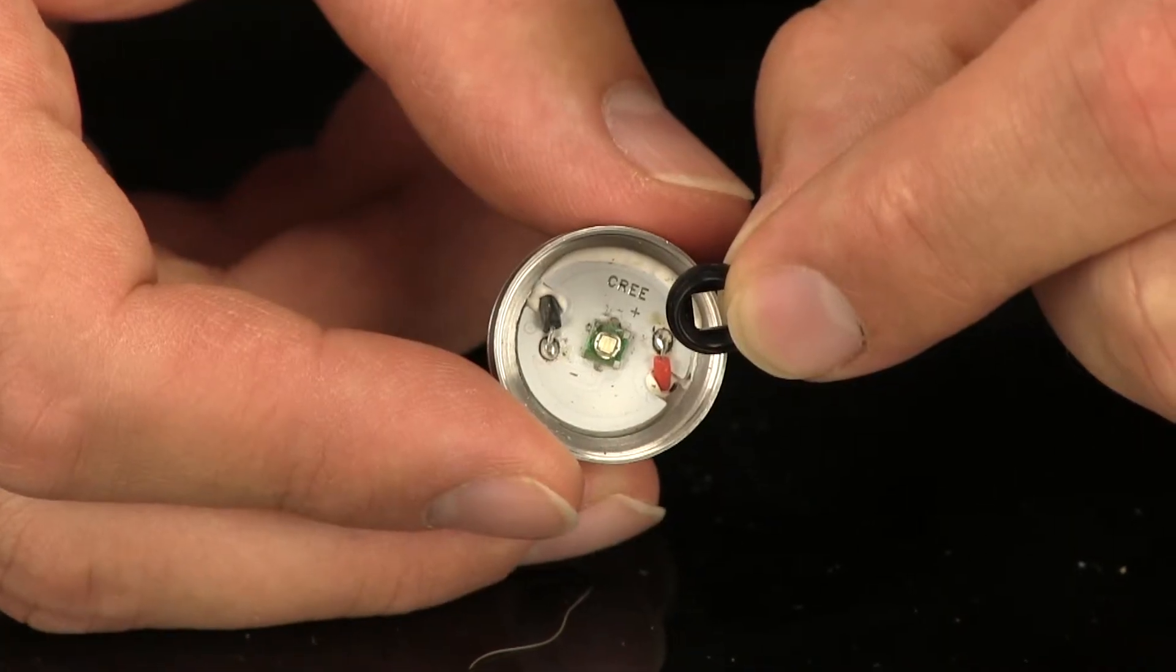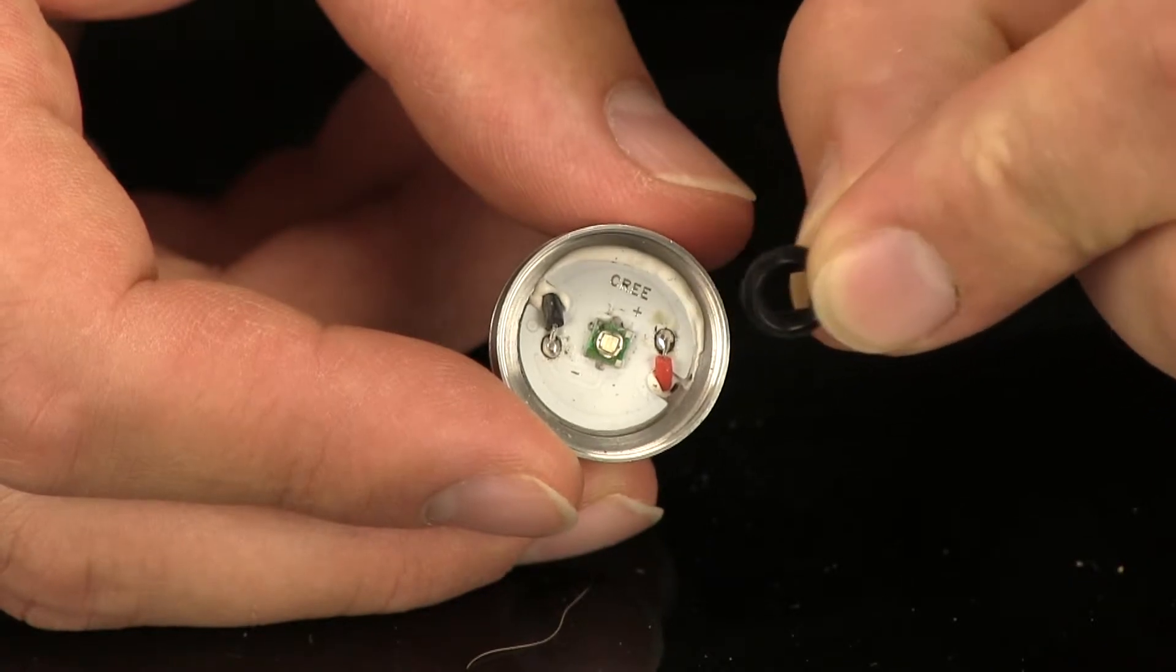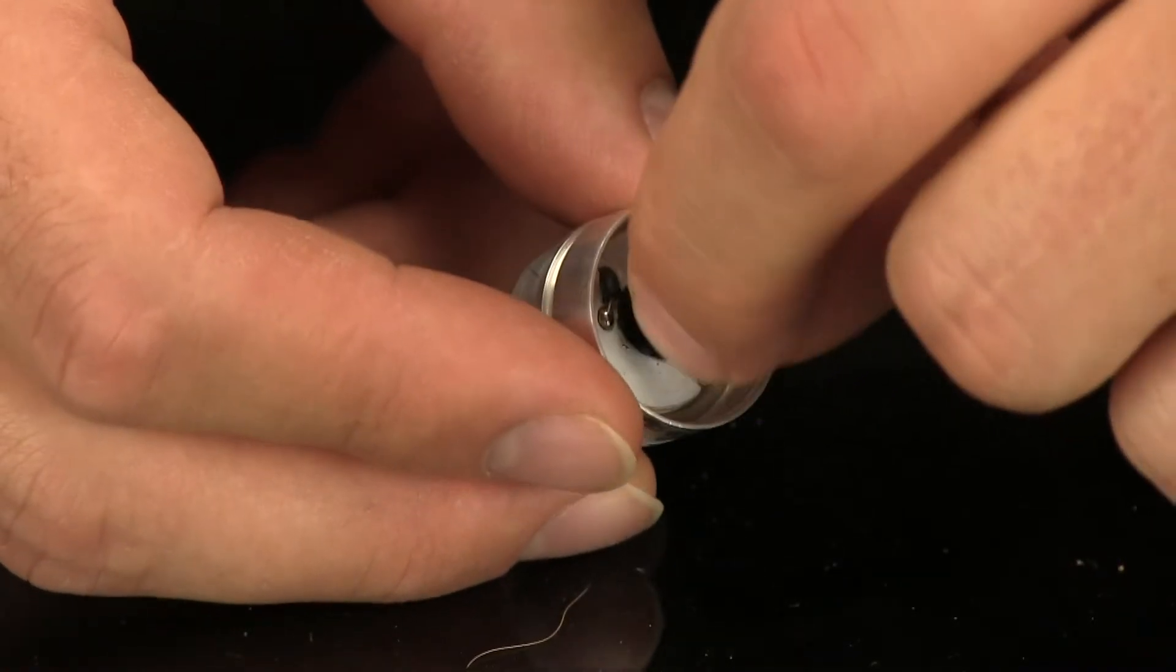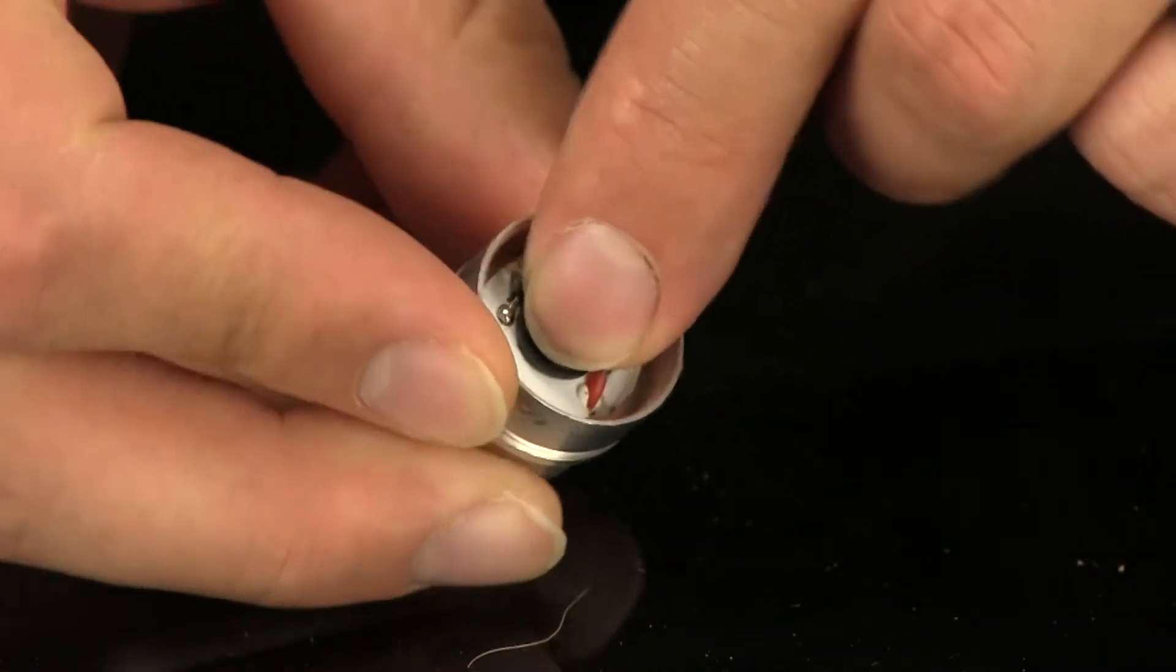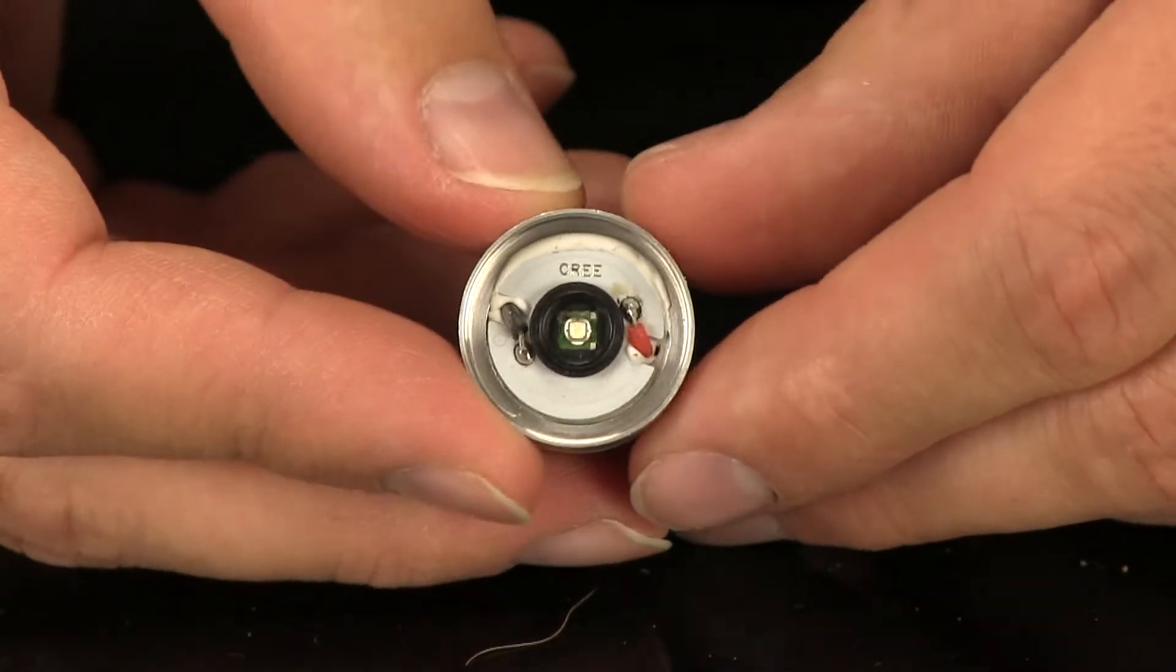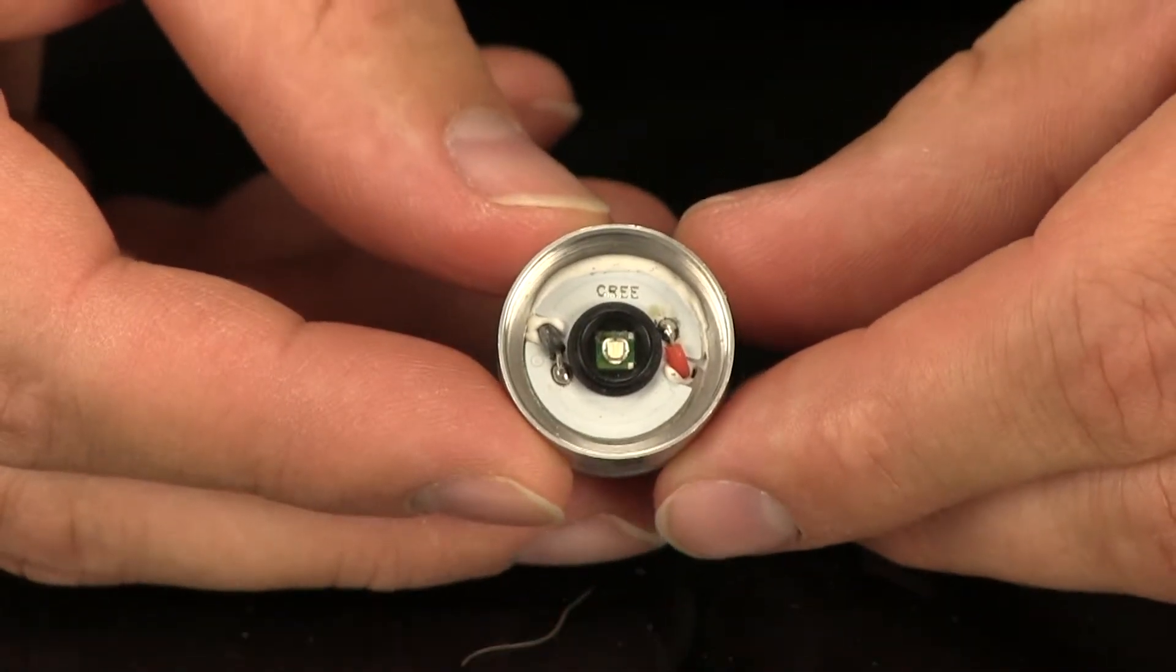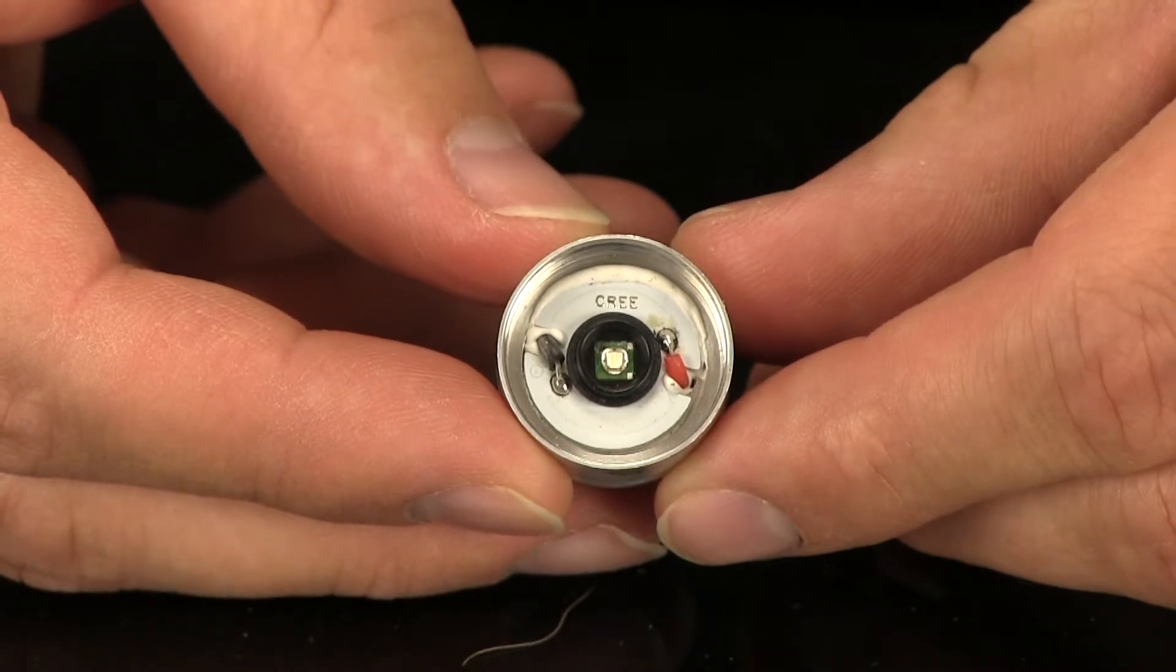Newer style LEDs have a friction fit black spacer to ensure light integrity. Be extremely careful not to lose this spacer when removing or installing newer style LEDs. The LED will not work without the spacer.